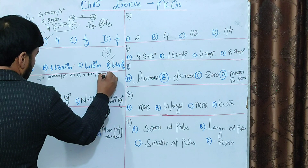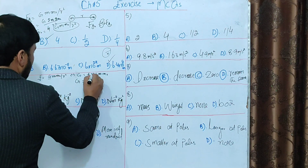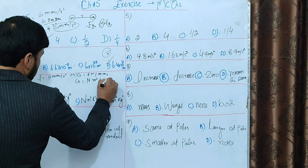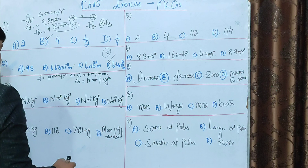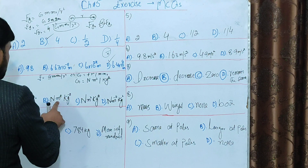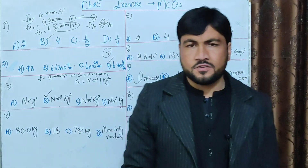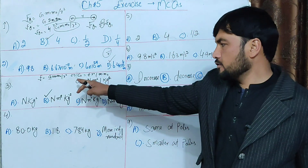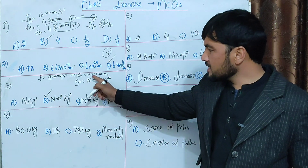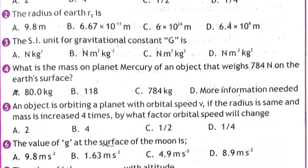From F = GM1M2/r², rearranging for G: units of G = Newton × r² / (M1 × M2) = Newton·meter² / kilogram². So option B — Newton·meter² per kilogram² — is correct. This is the SI unit of gravitational constant G.